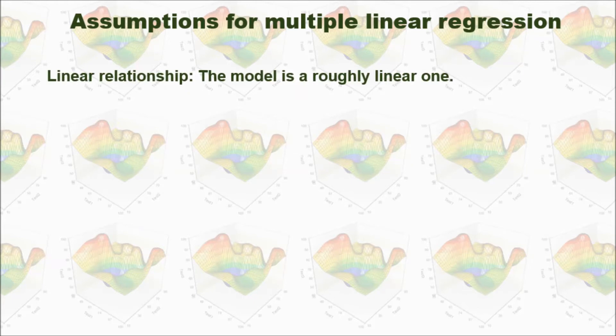First assumption is the relationship between independent variables and dependent variable should be linear. If the relationship is not linear, you need to transform the independent variable in order to get a linear relationship, or you need to use another kind of regression.